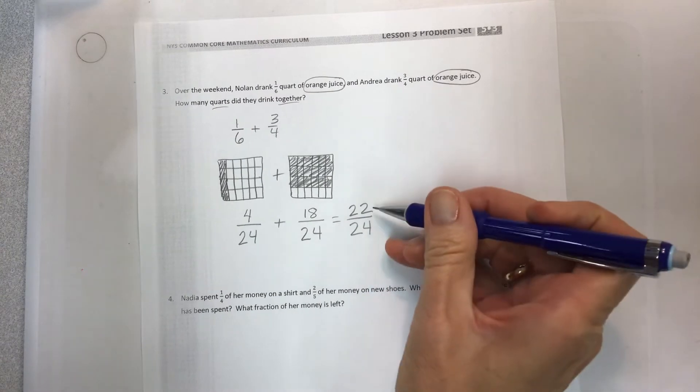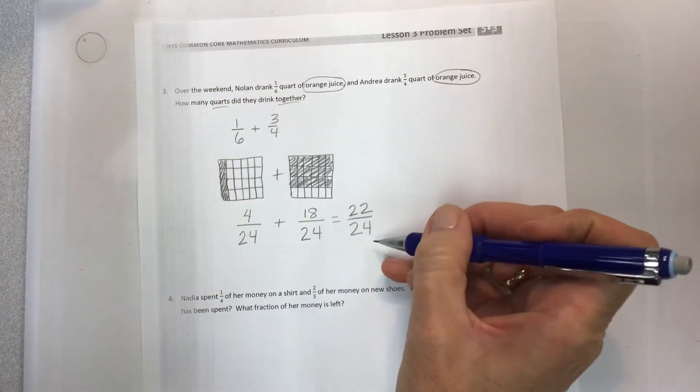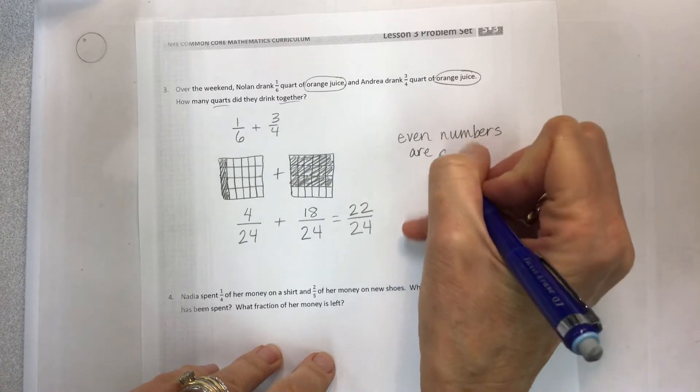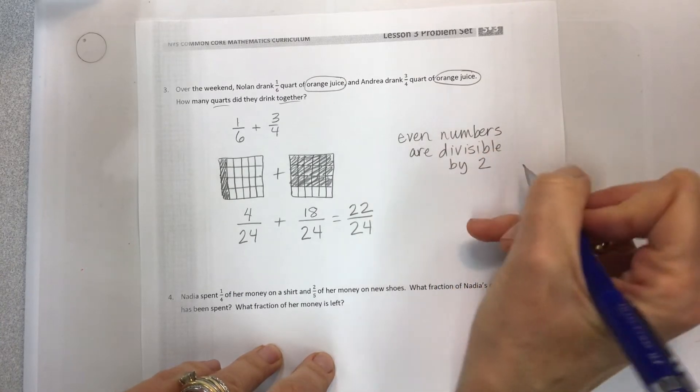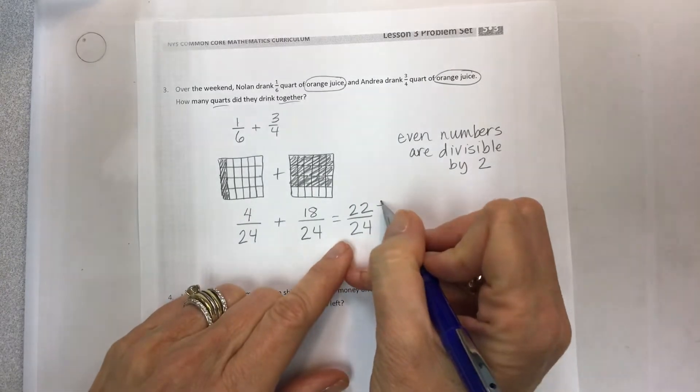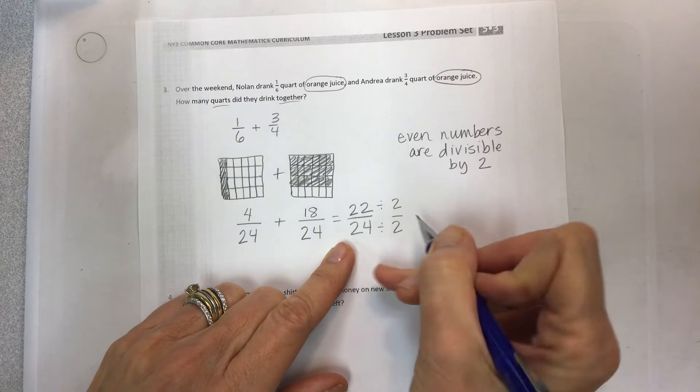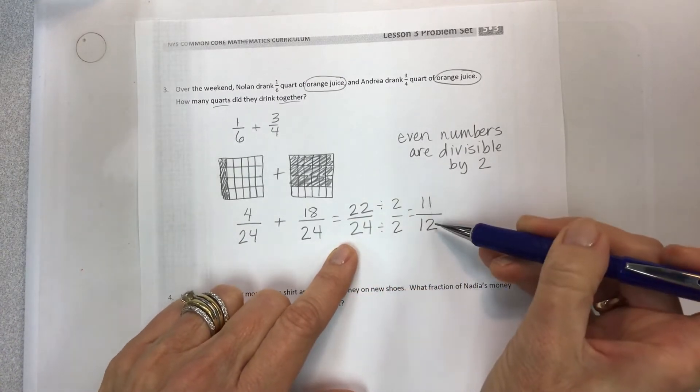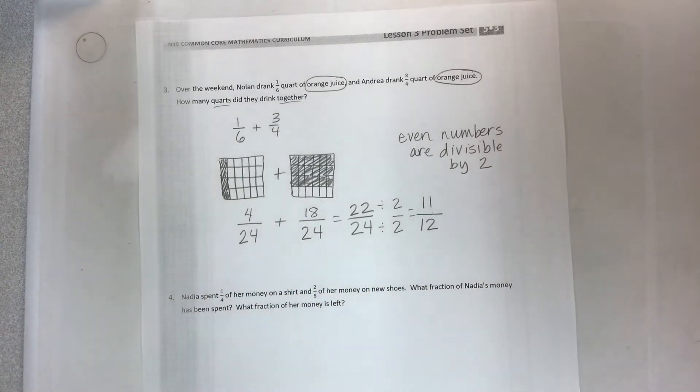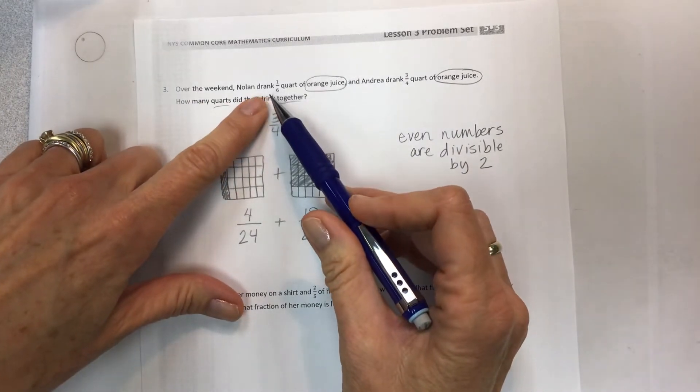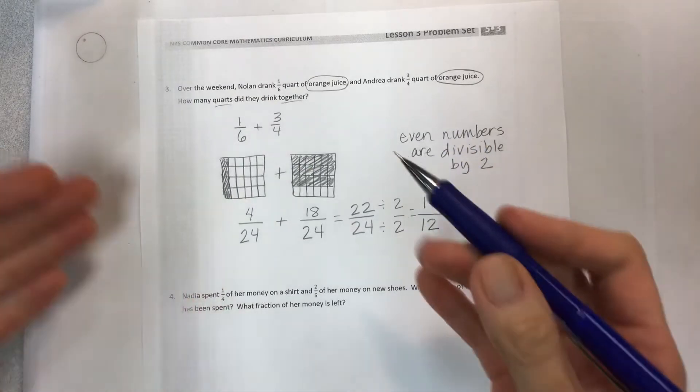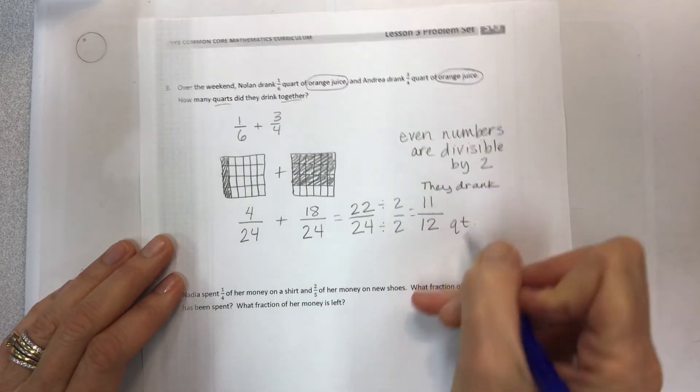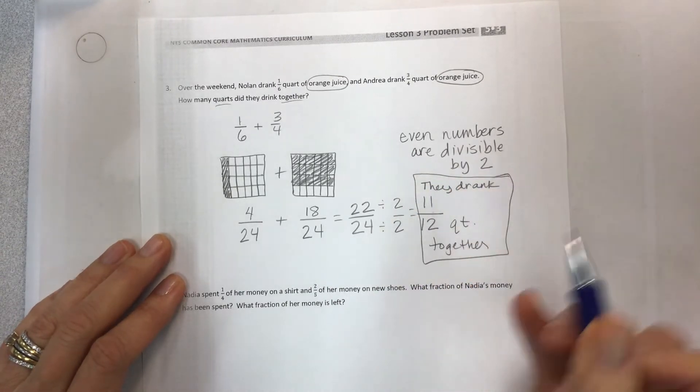Now when I add up 18 plus the 4 I'm getting a pretty big number here - 22 out of 24. Here's another problem where you should look at it and go, is this the simplest form that I could write? One of my other rules, my second rule for simplifying is - if I don't have one of my doubles - even numbers are divisible by 2. All even numbers are divisible by two. So what you can do is take your 2 and divide 22 by 2 to get 11, and 24 by 2 to get 12. And now they're only one apart and I know that that is the simplest form.